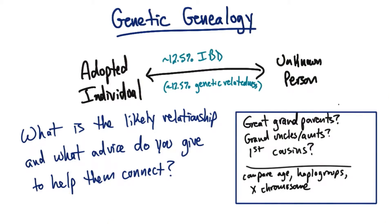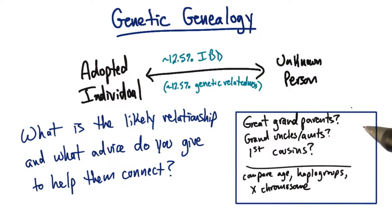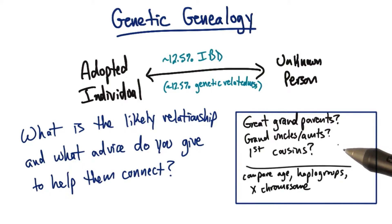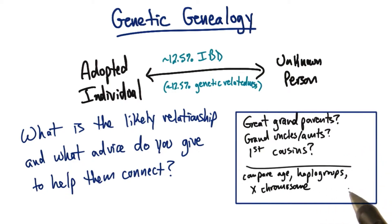Again, we have a question with no solid right or wrong answer. There are several different relationships that we could predict for this individual: great-grandparent, granduncles, aunts, first cousins. And there's a lot of information we could use to help figure out which of those groups best fits.